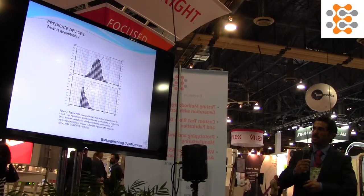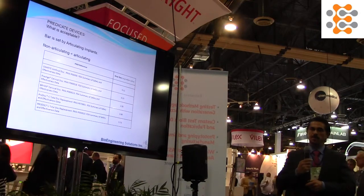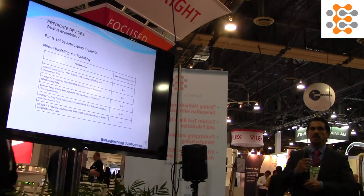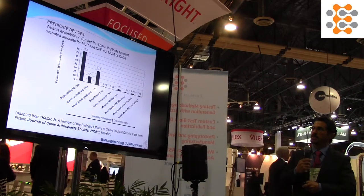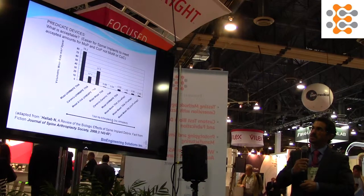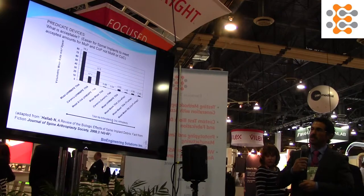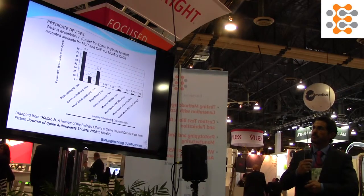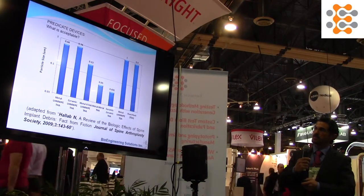What is acceptable criteria? There's a lot of data out there for different implants at the FDA website, and you can compare current implants to past implants when it comes to wear, particle size, and particle number. It's easier for spinal implants to meet accepted amounts for metal-on-poly and ceramic-on-poly because of the lower wear rates associated with spinal devices compared to hips and knees. What is acceptable from a particle size perspective is also available.